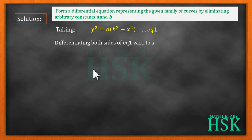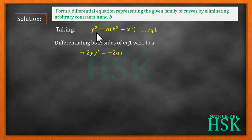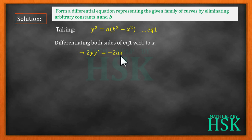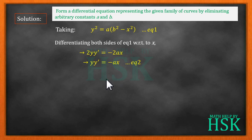Differentiating equation one, I obtain 2y·y' = −2ax. The differentiation of y² with respect to x is 2y·(dy/dx), and for x² it is 2x, with 'a' outside the bracket giving −2ax. The 2s cancel, so I get y·y' = −ax. This is equation number two.